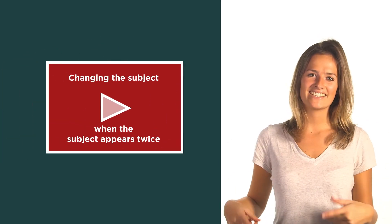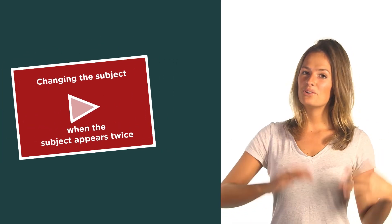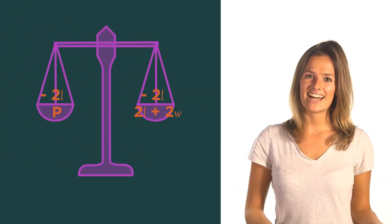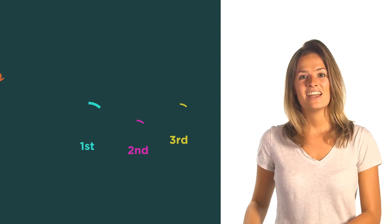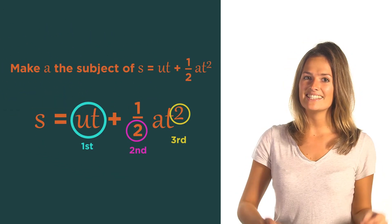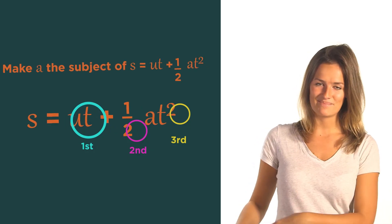So there we have changing the subject of a formula. Always use opposites and remember to do the opposites to both sides so that it cancels on one side. And we always start with the things that are least connected to our chosen subjects.